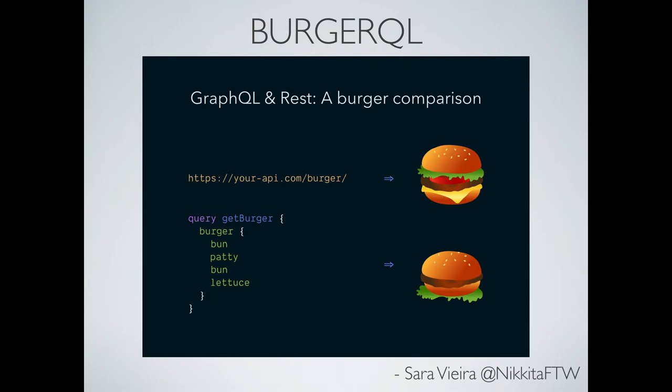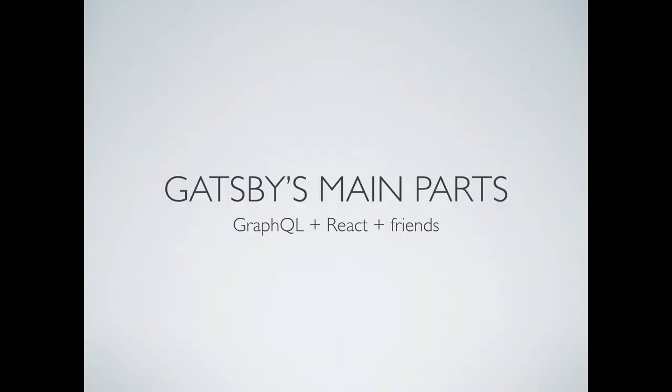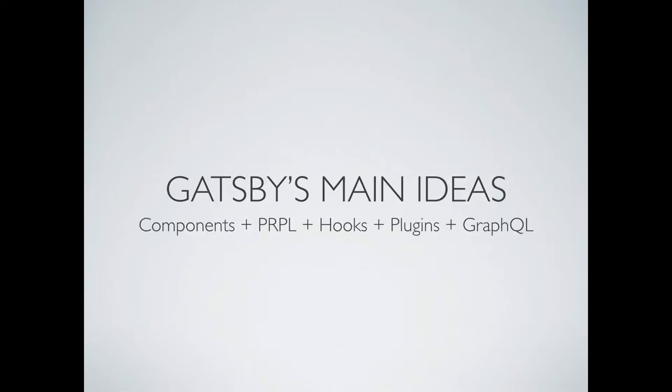So we covered the main parts — GraphQL, React, Webpack and friends — and the main ideas: components, PRPL, lifecycle hooks and the API, the plugin system, and GraphQL again. Any questions so far? I want to make sure we have time for questions at the end. I know some people here didn't know what Gatsby was coming in, so I know it's a lot of information.